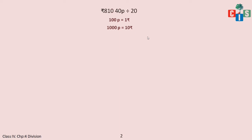So we will have our first example: rupees 810, 40 paisa divided by 20. When you have such a question where you have rupees and paisa, you can solve it in two ways — method 1 and method 2. We will see each method and then decide which one to follow most.